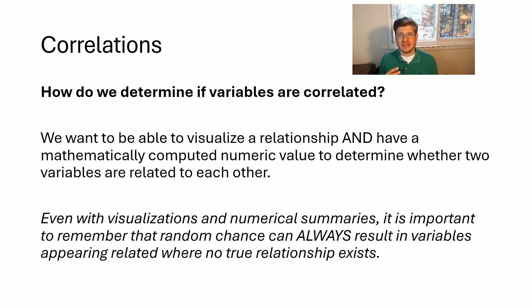So how do I actually determine then using math and statistics whether two variables are related to each other? Well, first, we want to be able to visualize that relationship. Again, we're visual creatures. Being able to see things is very, very helpful. And then we also want to have some sort of mathematical value, some numerical value we can compute to determine whether or not those two variables are going to be related to each other. And one thing I also want to make a note of now as well is that even if our visualizations and our summaries show that these two variables are related to each other, it's important to remember that there's always random chance and random chance can always result in variables appearing to be related when no true relationship actually exists between the two of them.